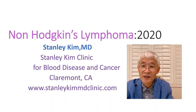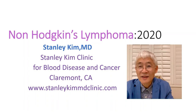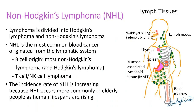Lymphoma is the most common blood cancer originating from lymphatic tissues. It's divided into Hodgkin's lymphoma and non-Hodgkin's lymphoma. Because there are so many types, over 60, it's impossible to memorize all of them. So we will discuss more commonly occurring non-Hodgkin's lymphoma.